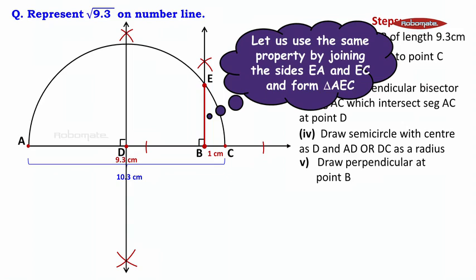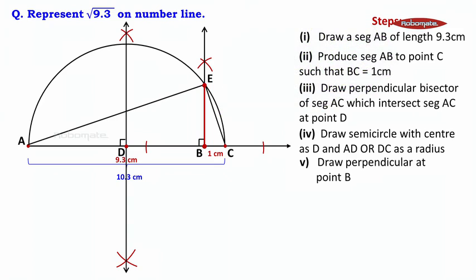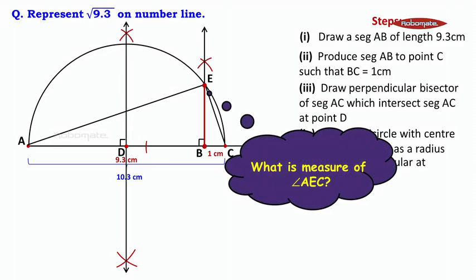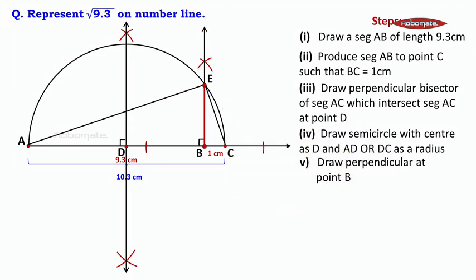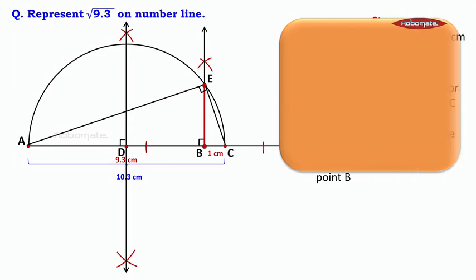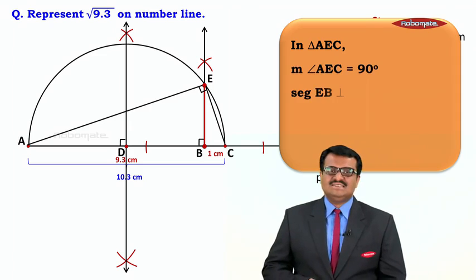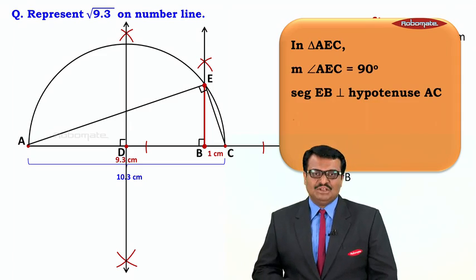Let us use the same property by joining EA and EC to form triangle AEC. Now, what is the measure of angle AEC? The measure of angle AEC equals 90 degrees. Why? Because it is the angle subtended by a semicircle, so that angle is 90 degrees. In triangle AEC, the measure of angle AEC is 90 degrees, and EB is perpendicular to hypotenuse AC.